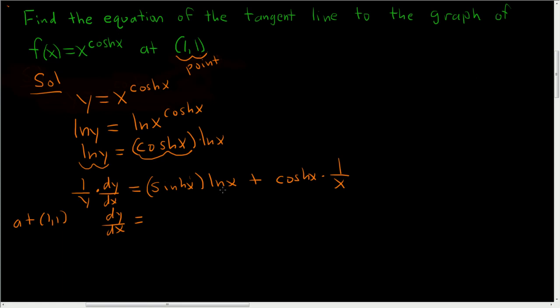So dy/dx equals, when you plug in 1, -sin(1) * ln(1) plus cos(1) * 1. The natural log of 1 is 0, so we just end up with dy/dx = cos(1).